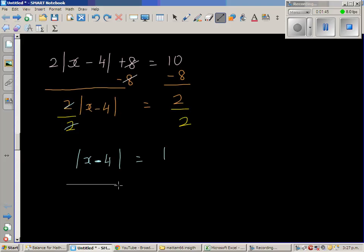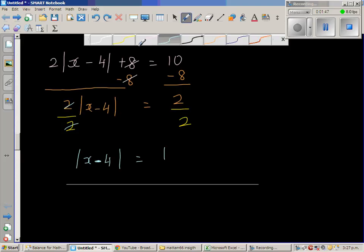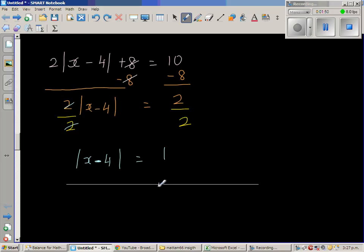So if you draw a number line and think about suppose 0 is the reference point, what is 1 away from 0? So 1 away from 0 is either 1 on the right or negative 1 to the left. So negative 1 is 1 away from 0. 1 is also 1 away from 0. So this implies I can say x minus 4 can be 1 or x minus 4 can be negative 1.